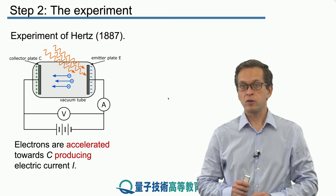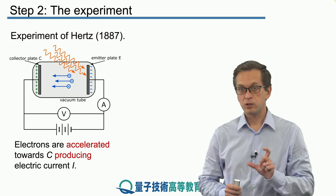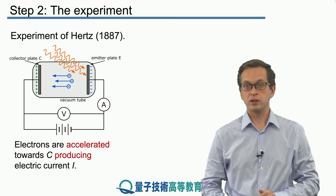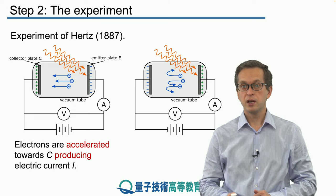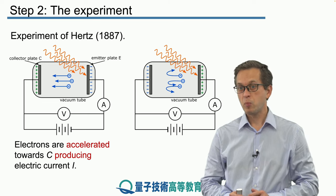But Hertz designed the experiment in such a way that he could change the polarity of the voltage. In other words, he could make the collector plate negatively charged and the emitter plate E positively charged.